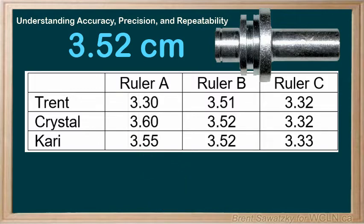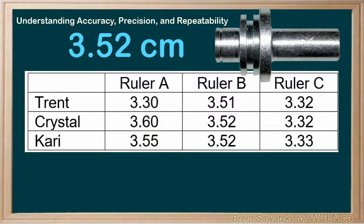That means the first digit is the only certain one. The last two digits are the uncertain ones, so they can easily be off by a tenth of a centimeter — it's a worker's guess at that point. Trent guessed 3.30, Crystal guessed 3.60, and Kerry guessed 3.55, which is very uncertain.